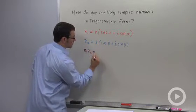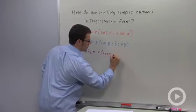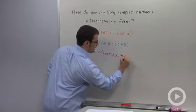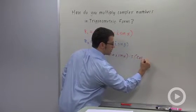Z1 times Z2 is R times cosine alpha plus I sine alpha times S times cosine beta plus I sine beta.